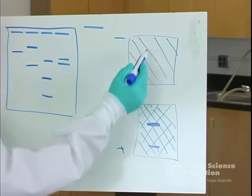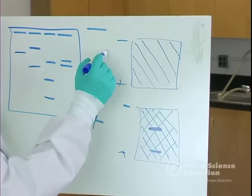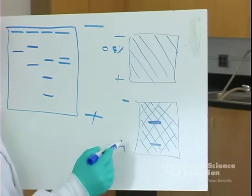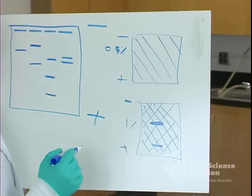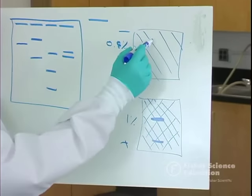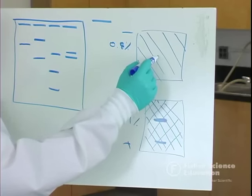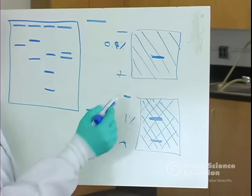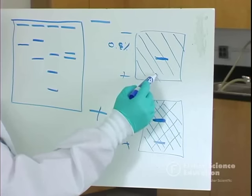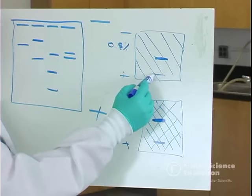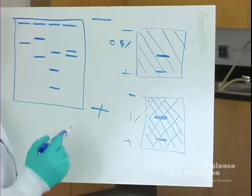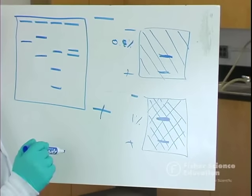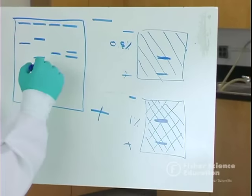Where the gel is less concentrated — for example, a 0.8% gel compared to a 1% gel — the horse, representing larger fragments, is going to move a little farther down the gel. And the dog, the smaller fragments, are going to move very far. That's the difference you see between the two different concentrations of gel, and in general how this works.